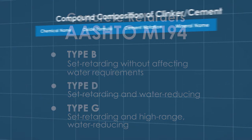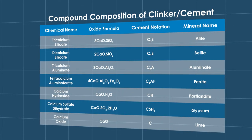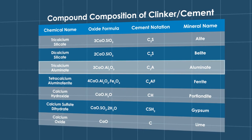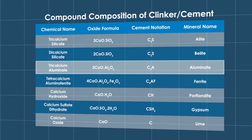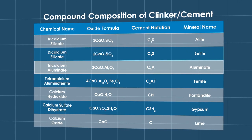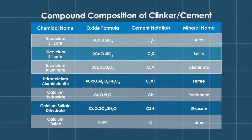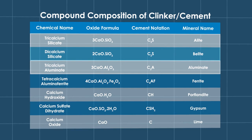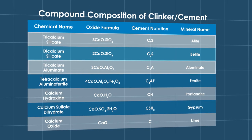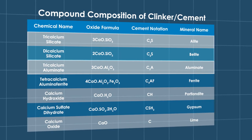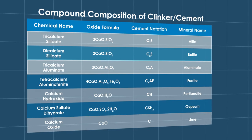Retarders tend to directly impact the hydration of the tricalcium aluminate phase, the calcium silicate phase, or both phases in the cement. They are sensitive to temperature and other mixture constituents and must be evaluated for interactions.